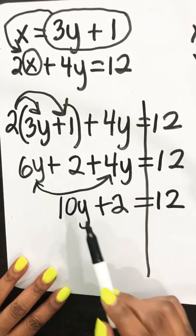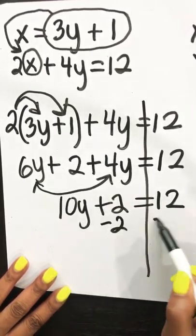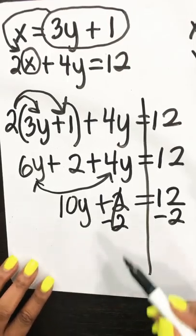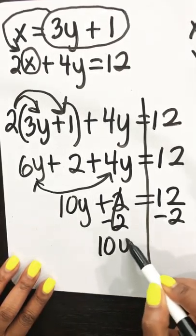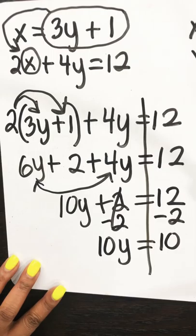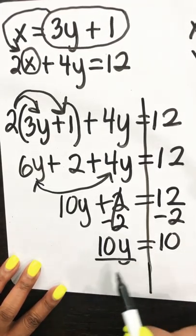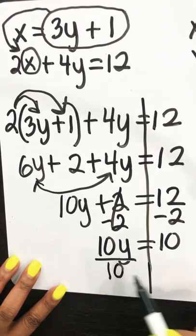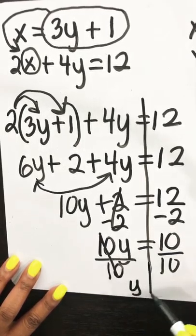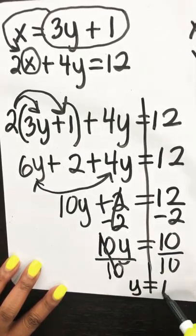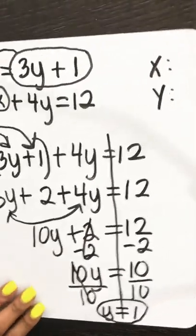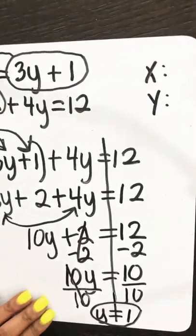Now we want to isolate 10y. We start by subtracting 2 from both sides — the 2 cancels out, giving us 10y equals 10. We're just solving for y as usual, so the 10s cancel out and y equals 1, because 10 divided by 10 is 1. We've found our value for y.